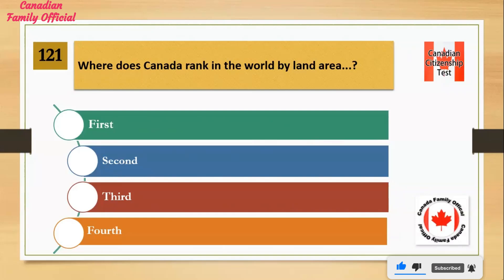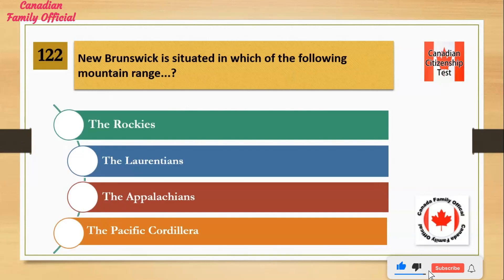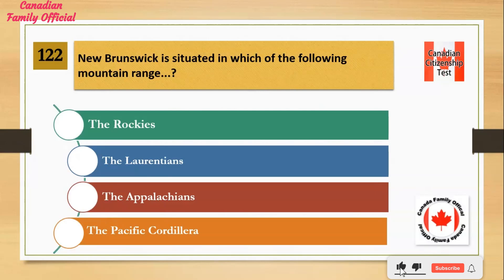Where does Canada rank in the world by land area? Number 1: first. Number 2: second. Number 3: third. Number 4: fourth. And the answer is second. New Brunswick is situated in which of the following mountain ranges?